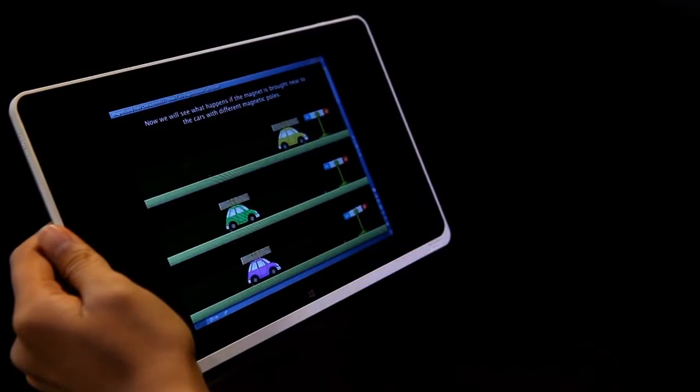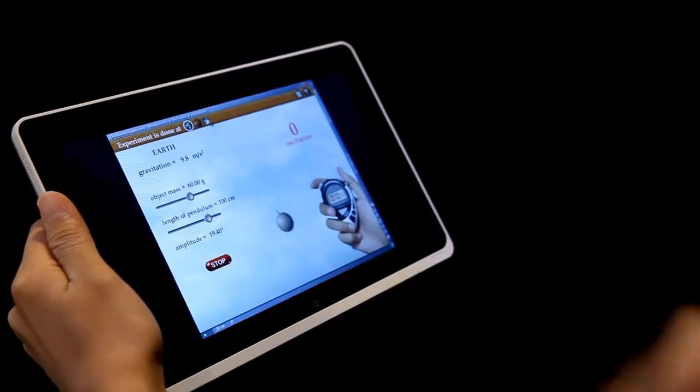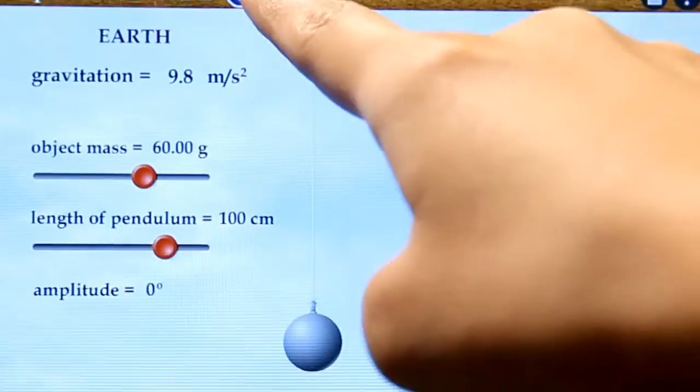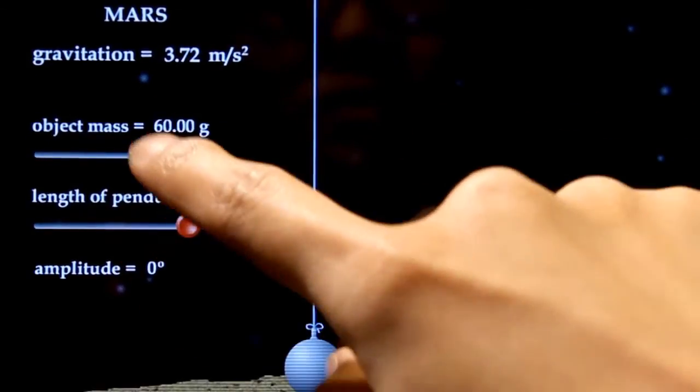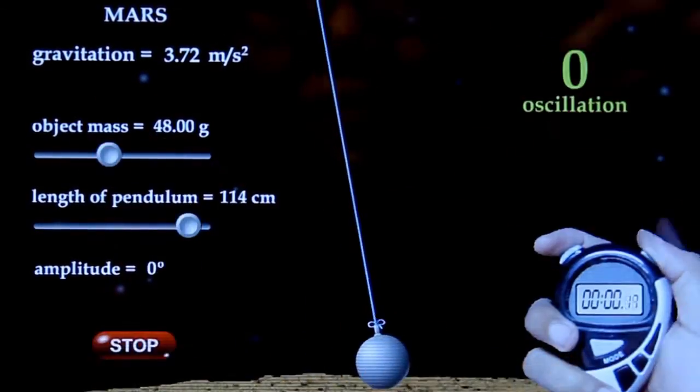Reflecting real life scenarios, some that are even impossible to be done in a classroom, like this experiment: Period of a Pendulum, done with the gravity of the Moon or Mars.